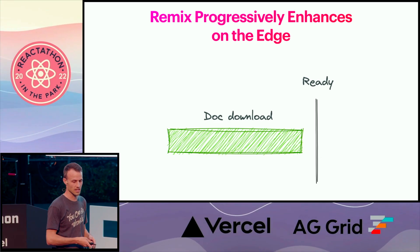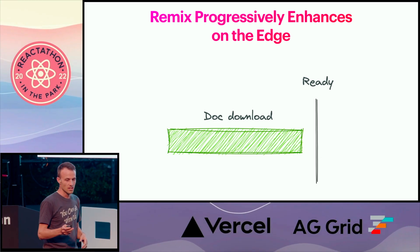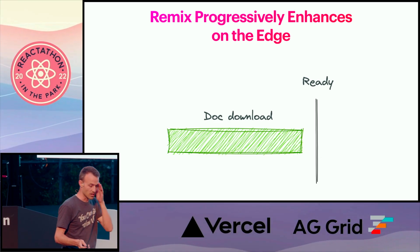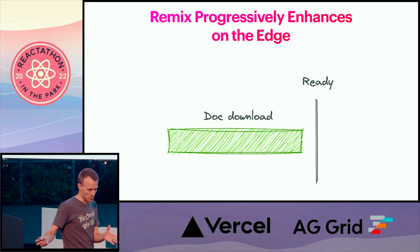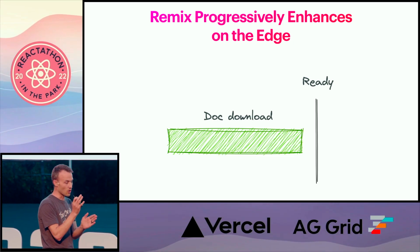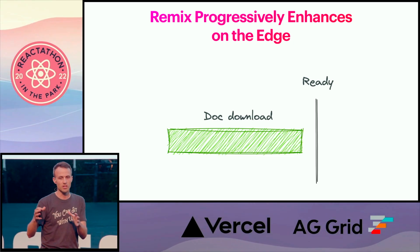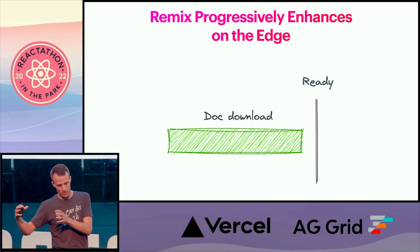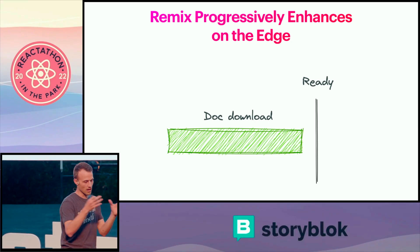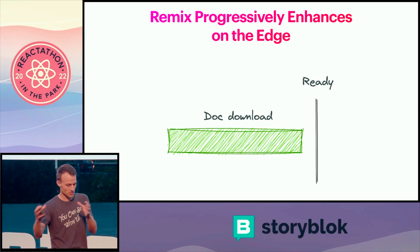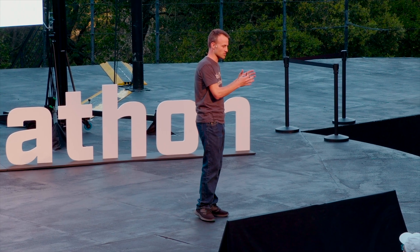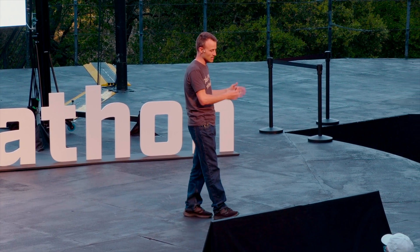That is progressive enhancement on the edge — making an already ultra-fast experience even faster, because the edge allows us to move code out of the browser into the edge. Remix allows us to move code off the browser into the edge, and then we don't even need that remaining JavaScript for the app to start functioning right from the get-go.